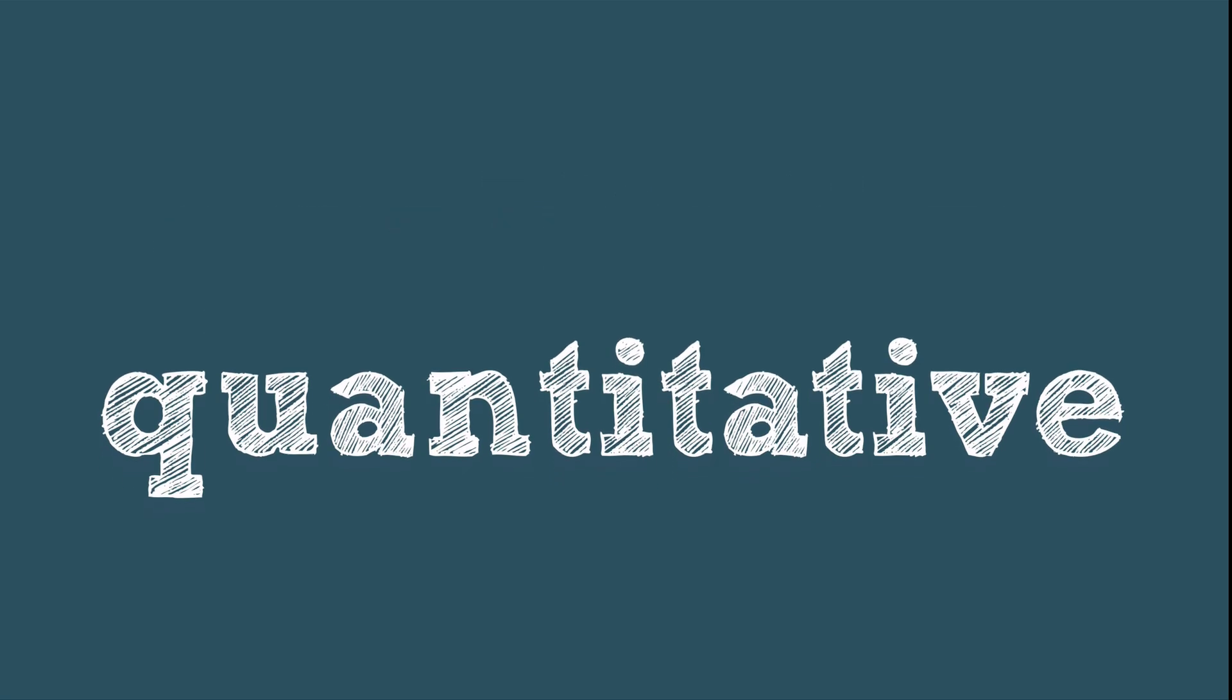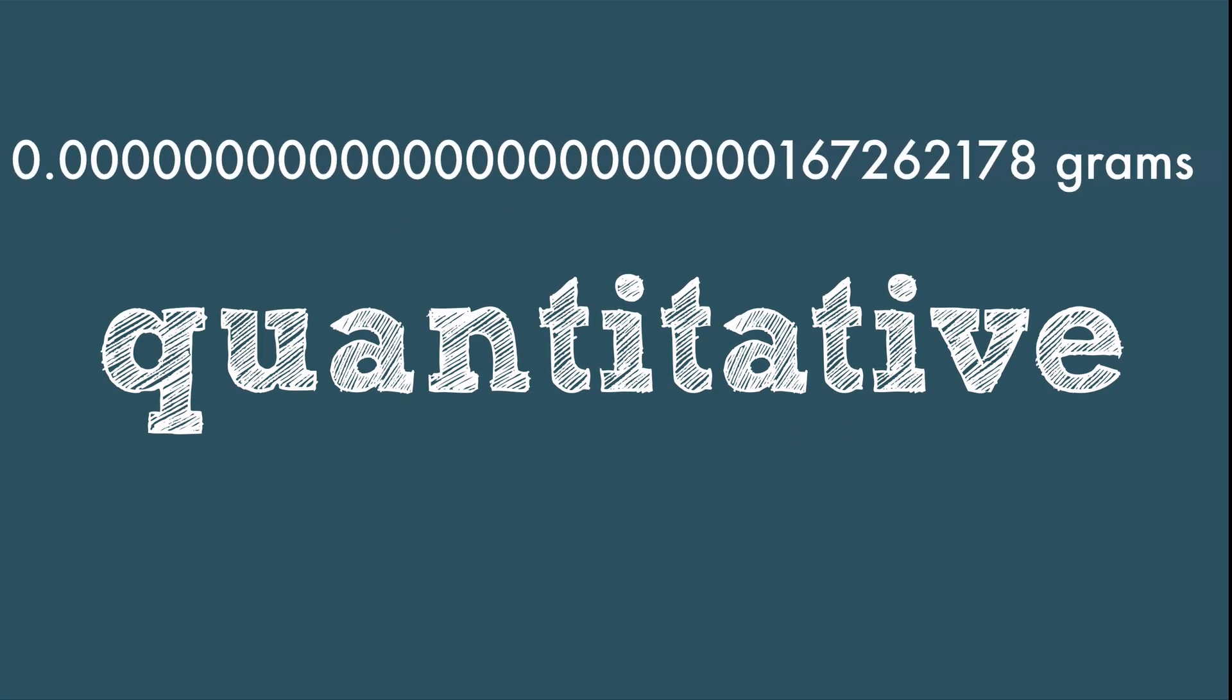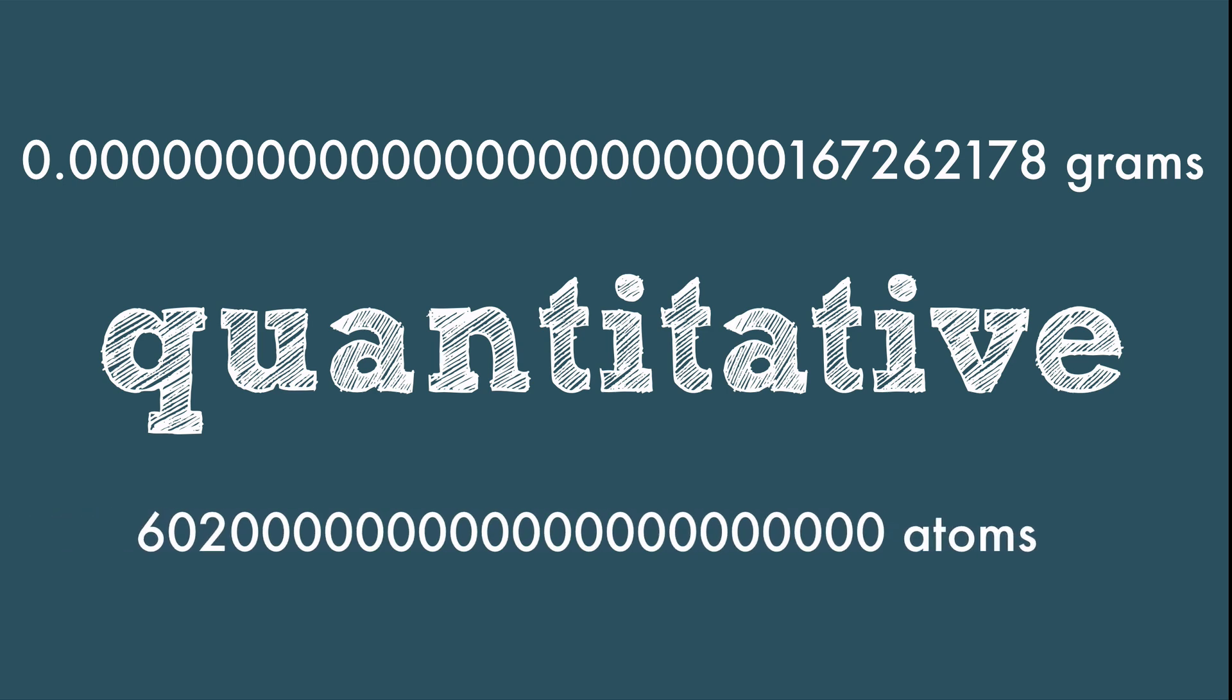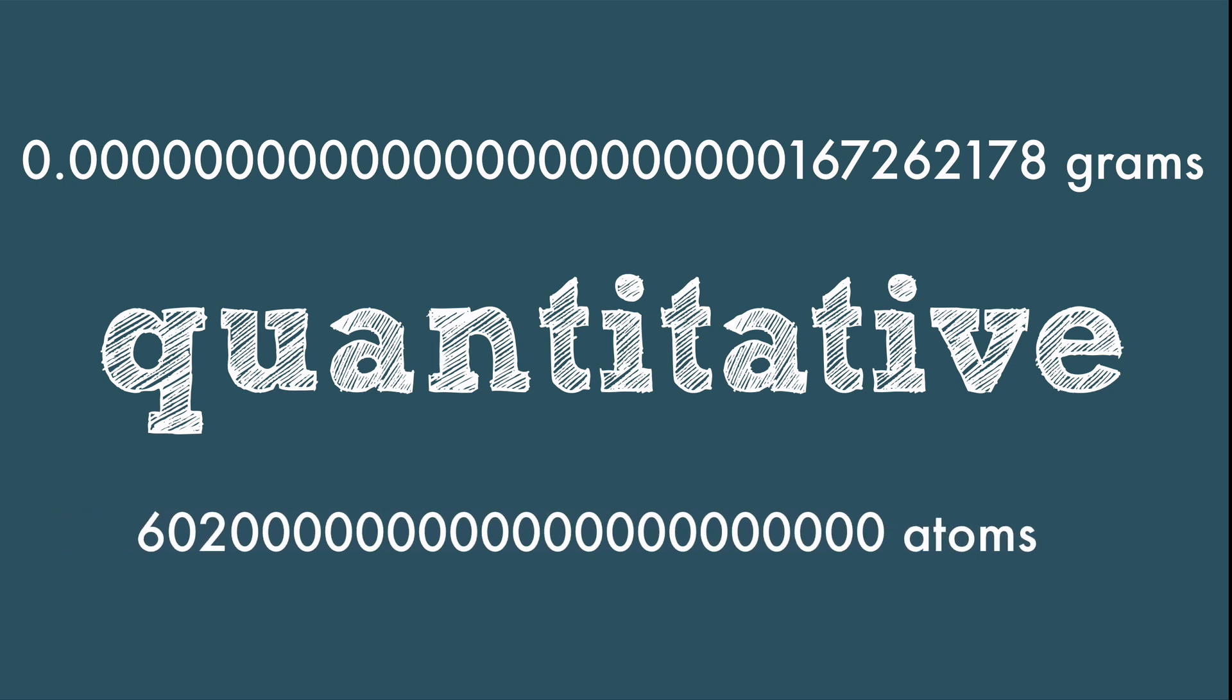In chemistry we deal with such tiny particles and such large numbers of those particles that we need a way to wrangle those huge numbers. Instead of writing the zeros out each time, we use scientific notation.